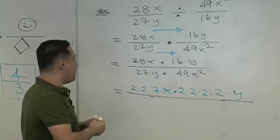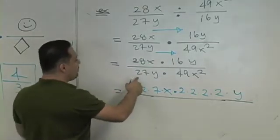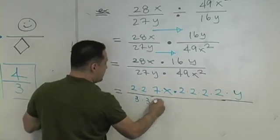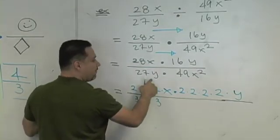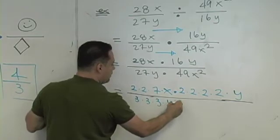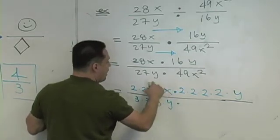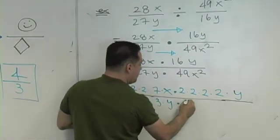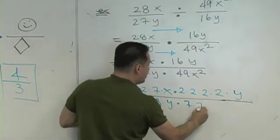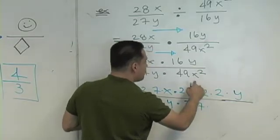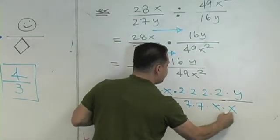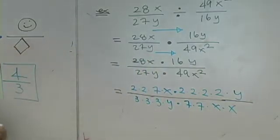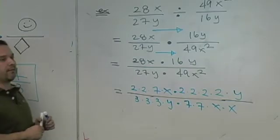Now let's factor the denominator. 27 is 3 times 3 times 3 — don't forget times your y. How do you break 49 down? 7 times 7. And x squared? x times x. Everything is broken down.